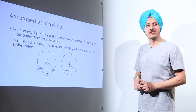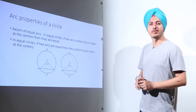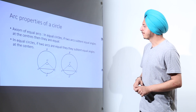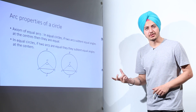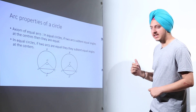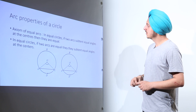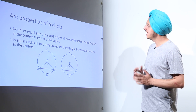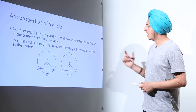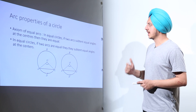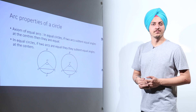The next part we are moving on to are the arc properties of a circle. What are arc properties? First we have the axioms of equal arcs. This axiom says: in equal circles, if two arcs subtend equal angles at the center, then they are equal.